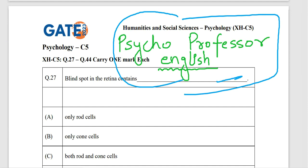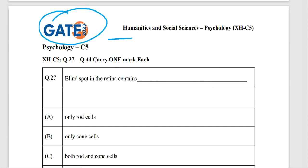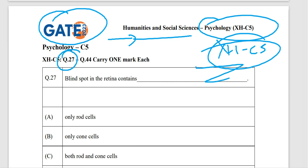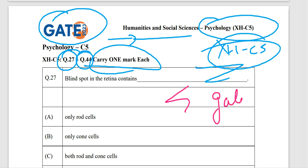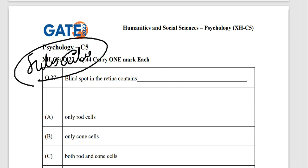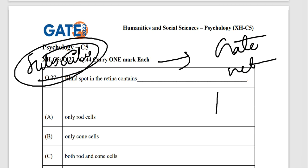Welcome back everyone to the channel. Today we will be discussing the paper of GATE 2023 for psychology XHC5. Questions 27 to 44 carry one mark each, so we will look at some of the questions asked in the GATE 2023 examination. Please subscribe to the channel as we discuss everything about GATE, NET, and psychology-related examinations.